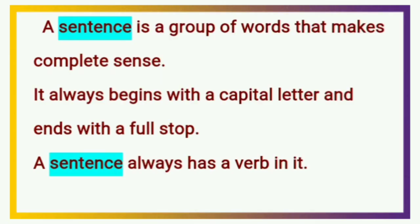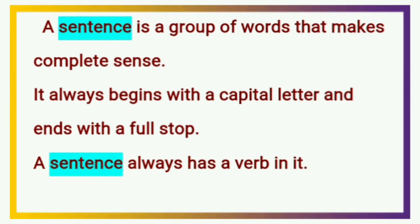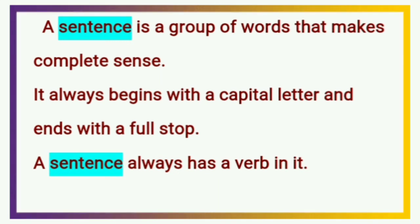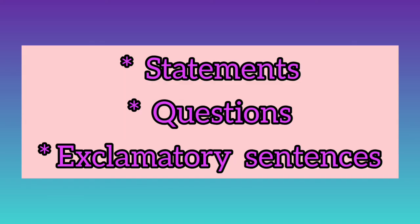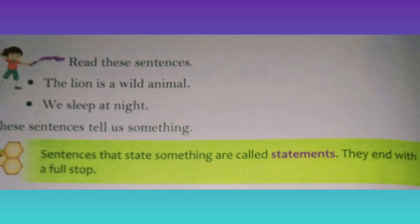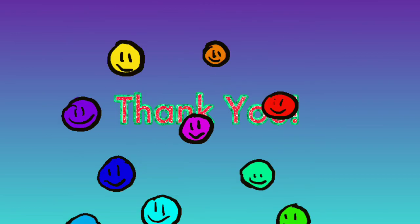Hope you have understood what a sentence is and the different types of sentences. A sentence is a group of words that makes complete sense. It always begins with a capital letter and ends with a full stop. In this chapter we learned three types of sentences: statements, questions, and exclamatory sentences. Statements end with a full stop, questions end with a question mark, and exclamatory sentences end with an exclamation mark. Read this chapter carefully and complete your work. That's all for today. Thank you.